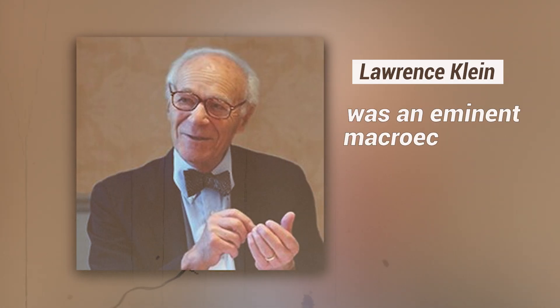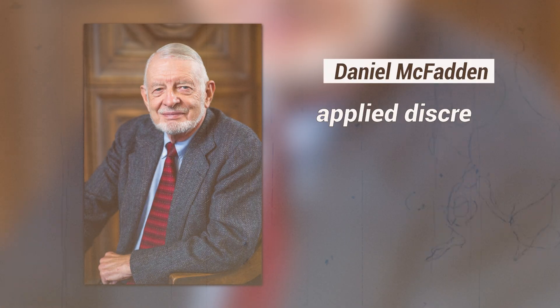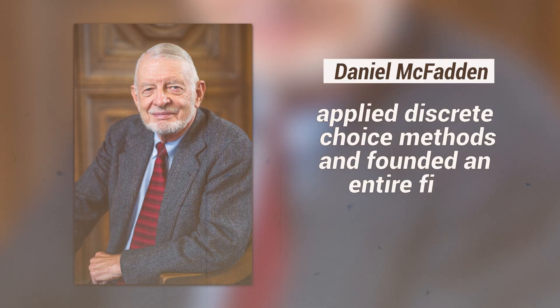These included large-scale macroeconomic forecasting models with hundreds of equations, and also detailed microeconometric models of consumer behavior. Leading figures built their careers on this type of structural modeling. Lawrence Klein fathered the movement of macroeconomic forecasting, while Daniel McFadden applied discrete choice methods and founded an entire field still used today. This was the golden age of structural econometrics — economists believed that estimating more complex structural models could lead to better insights about human behavior and better policy recommendations.